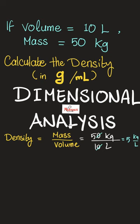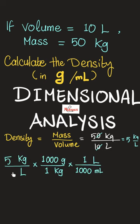Next, the conversion. Dimensional analysis. So I start with what I have, 5 kilograms per liter. Now I want to cancel the kilograms. So I put it down here and I know that 1 kilogram is 1000 grams.